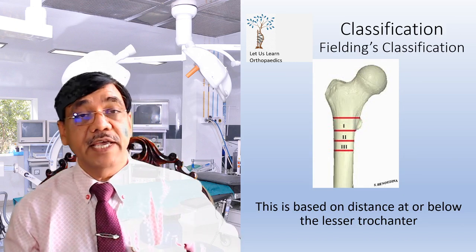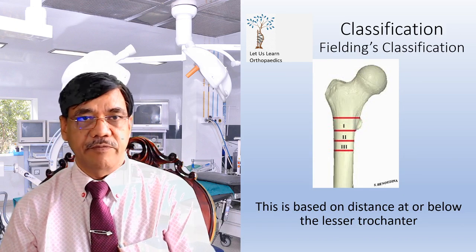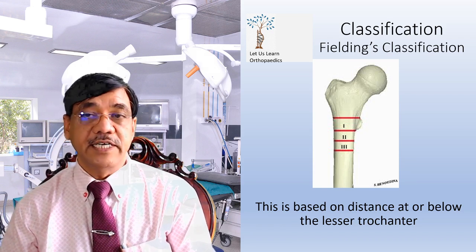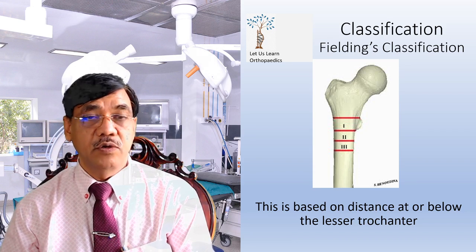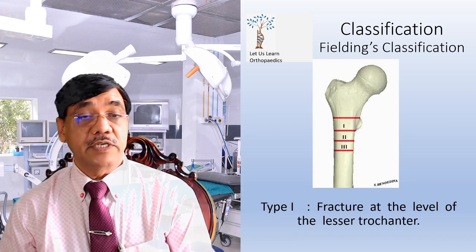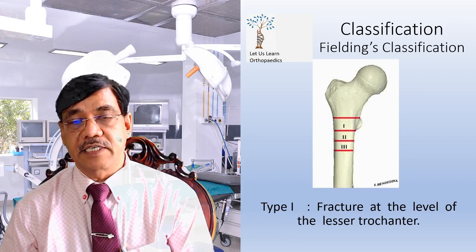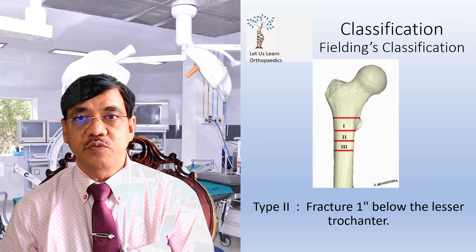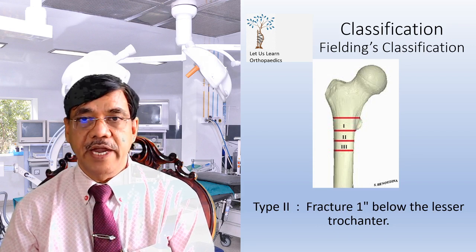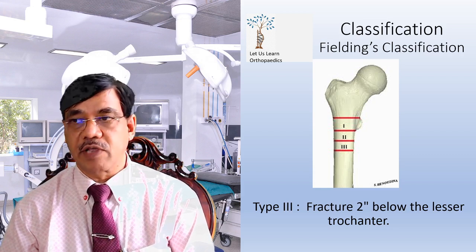Fielding has given a classification of subtrochanteric fractures based on distance at or below the lesser trochanter. Type 1 is the fracture at the level of the lesser trochanter. Type 2 is one inch below the lesser trochanter. Type 3 is two inches below the lesser trochanter.